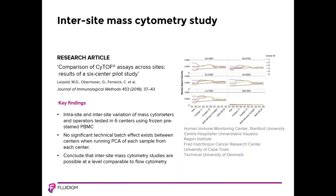Multi-site comparisons of mass cytometry have been performed. This one was published in 2018 and was run by Holden Maecker's Human Immune Monitoring Corps at Stanford. Note that the six sites participating were worldwide. In this study, they tested intra- and inter-site variation of mass cytometers and operators using frozen pre-stained PBMCs. There were no significant technical batch effects found between centers when running principal component analysis. The authors concluded that inter-site mass cytometry studies are possible with a level of reproducibility comparable to that of flow cytometry.